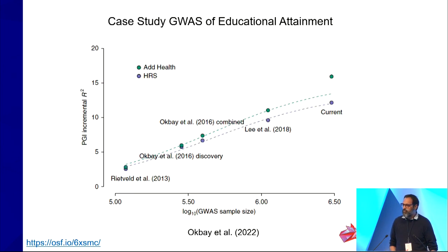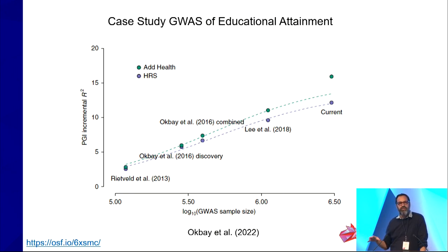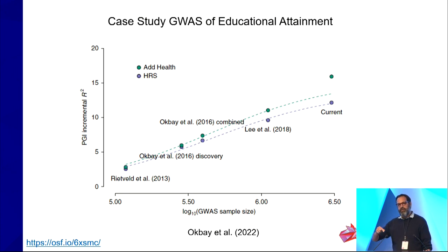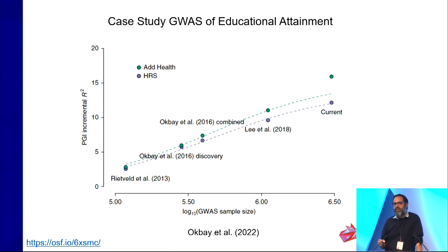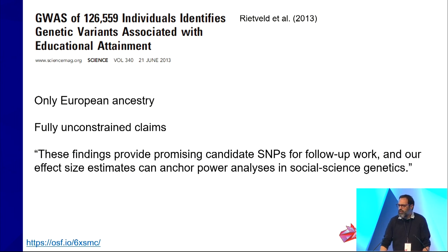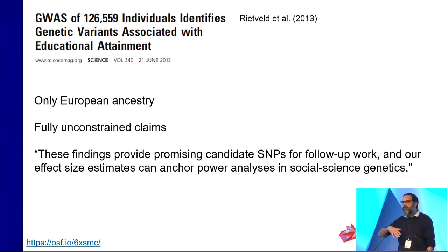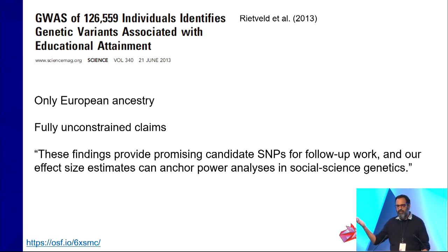To provide a case study, I'll briefly go through GWAS studies of educational attainment — genome-wide association studies that examine the entire genome for genetic polymorphisms linked to some outcome. The hit alleles can be added to create a polygenic score to predict an outcome. There have been four successive studies from more or less the same research team using similar methods. The first study had over 100,000 participants, all European heritage, with fully unconstrained claims — a limited sample broadly generalized to all humanity.